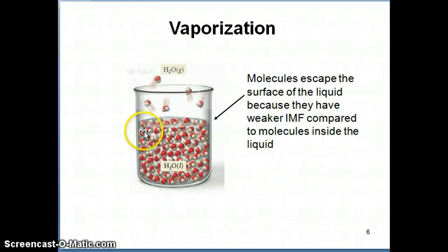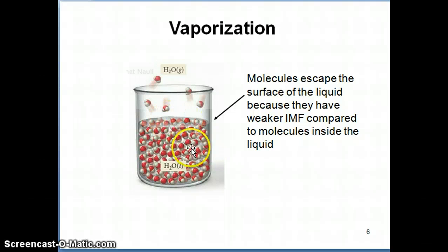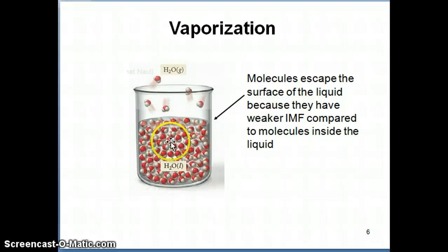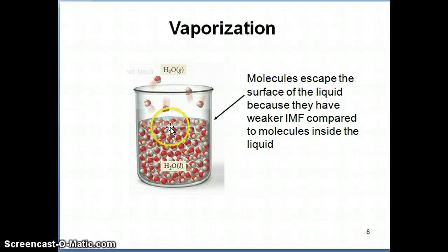The process of vaporization is basically the process where the liquid is being converted to the gas phase. Molecules on the surface, as we talked about in the previous topic, have fewer interactions holding them together compared to a molecule within the liquid itself. So if the interaction is weak enough, depending on temperature, the surface molecule will be able to actually escape. It's really a tug of war between the intermolecular forces — the hydrogen bonding forces for water — versus the actual kinetic energy of the molecule itself. If the kinetic energy is high enough, the molecules can escape the hydrogen bonding. It's easier for surface molecules to escape because there are fewer intermolecular forces holding them.